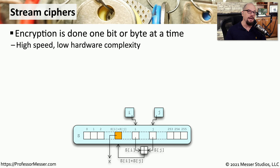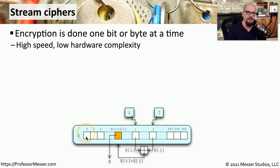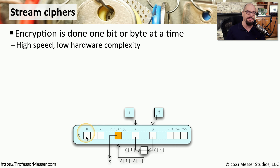With stream ciphers, we are encrypting one byte at a time. We will take our plain text, grab the first byte, encrypt that byte, and store the encrypted information. Then we'll take the second byte, encrypt that byte, and store that second byte, and so on. This allows us to encrypt very quickly because we can do this one byte at a time instead of using larger groups of data to encrypt at a single time.